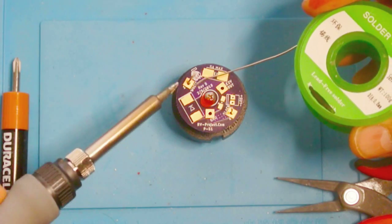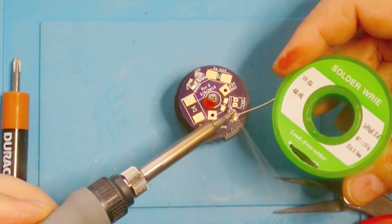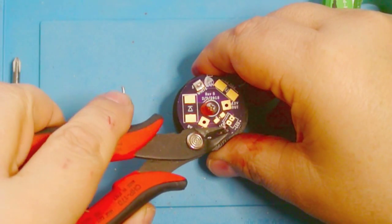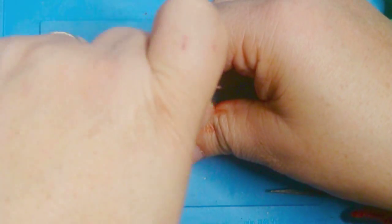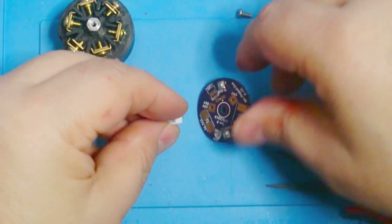We're just going to solder these two wires here, and then we cut those off. Temporarily, we're going to take this back off, because I want to solder in the connector for the LED.